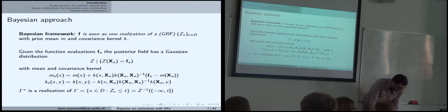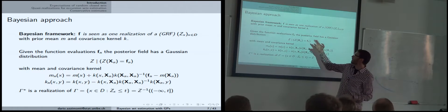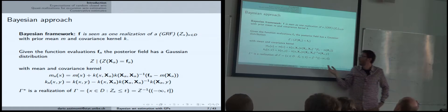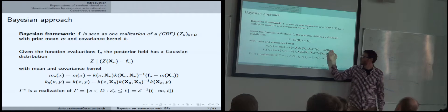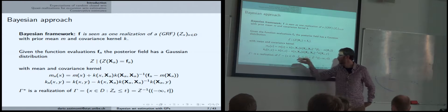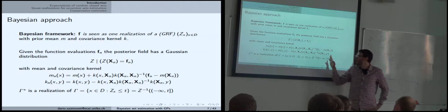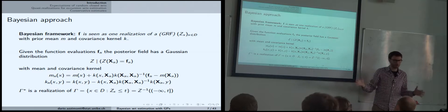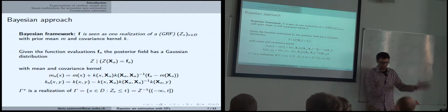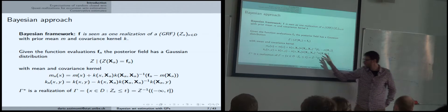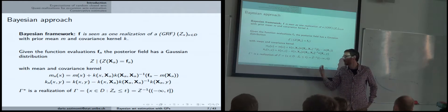You've probably already guessed where I'm going. We assume that f is one realization of a Gaussian random field. We specify a prior mean and covariance kernel, and then we can compute the posterior distribution of the field — the posterior mean and covariance kernel, which we've seen many times. I'm not going to go into the details of what you've seen throughout the week. There are important choices to make on the kernel and the model — that's one bit we won't touch. From this point, I'll use the posterior field to estimate the excursion set.